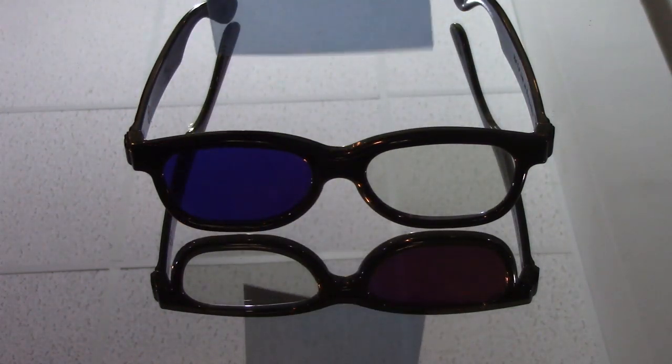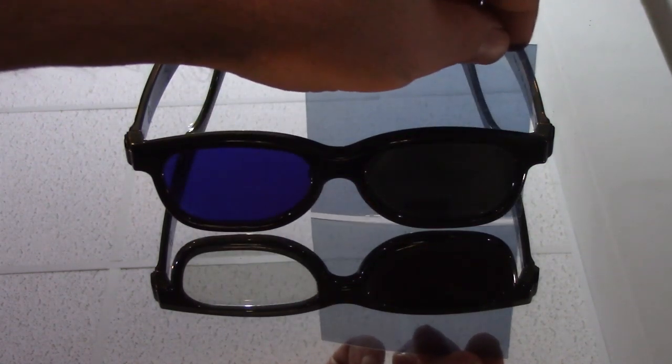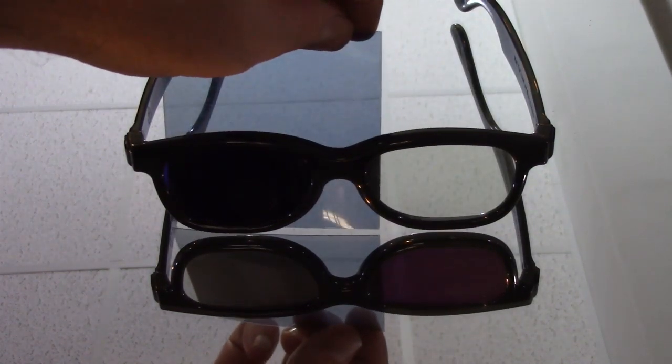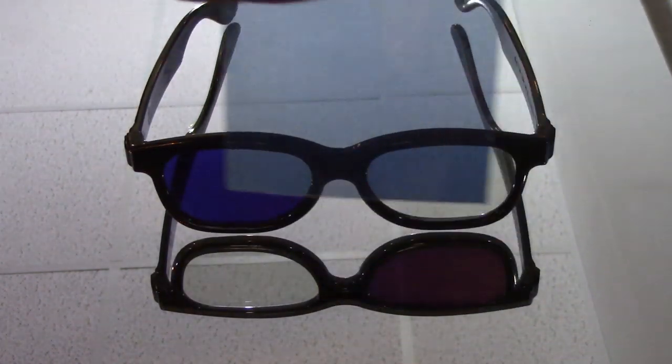I'm going to turn it sideways. Both lenses are blocked. How is that? But then when I put it in front, the light comes through. How about that? How about them apples?